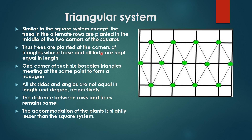Trees are planted at the corners of the triangle whose base and altitude are kept equal in length. The plant is planted at all three corners of the triangle. The base and the altitude of the triangle are kept equal — in other words, the base and altitude of the triangle remain equal in the triangular system of planting.